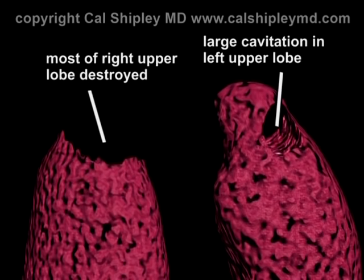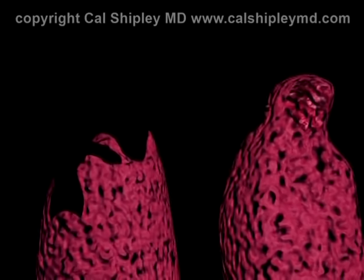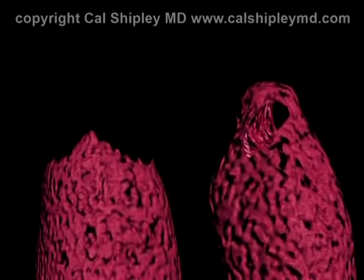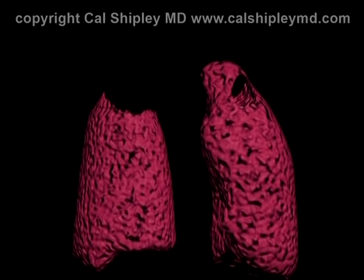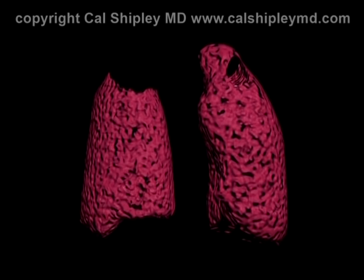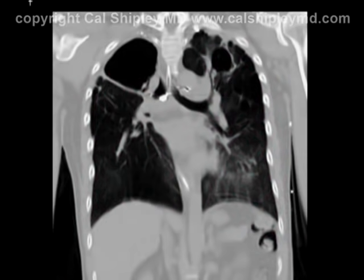The characteristic appearance of a cavitation is shown here in the left lung, as if a tunnel were bored through the lung tissue by the Mycobacterium bacillus. Here is the AP plain film chest X-ray which corresponds to the damage depicted.